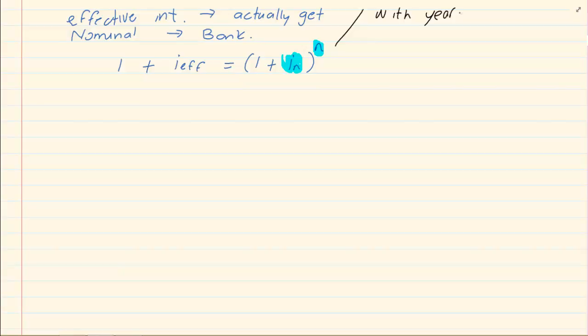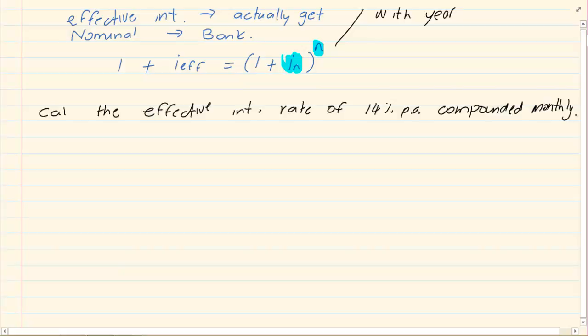The only thing you need is the interest and how often is it compounded. So if I say calculate the effective interest rate of 14% per annum compounded monthly. Now you really don't need an amount. You don't need how many years because we are always going to work with one year. So what we are interested is the I and the N. The N is one year but since it is compounded monthly we know that it is times 12. And then our interest is 14 over 100. But again because it is compounded monthly we are going to divide by 12.